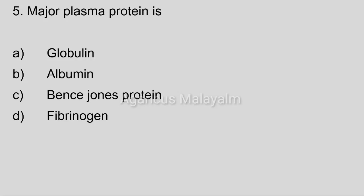Fifth question [question stem missing]. Answer options. Option A: 18. Option B: Albumin. Option C: Bence-Jones protein. Option D: Fibrinogen. Correct answer: Option B, Albumin.